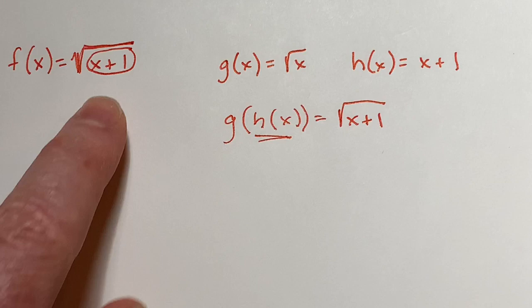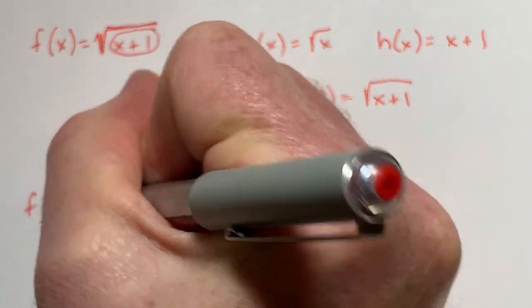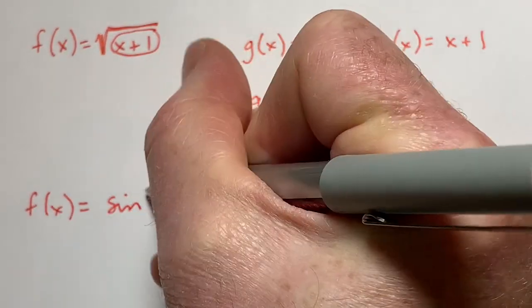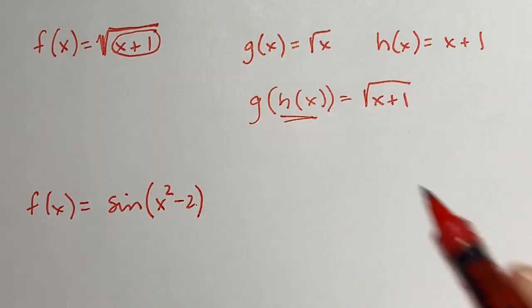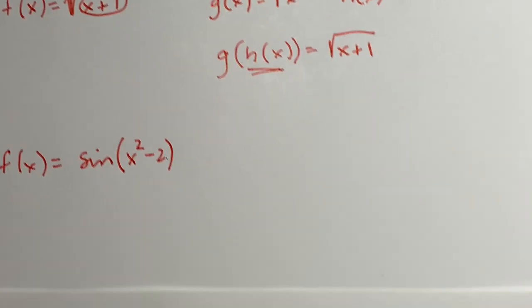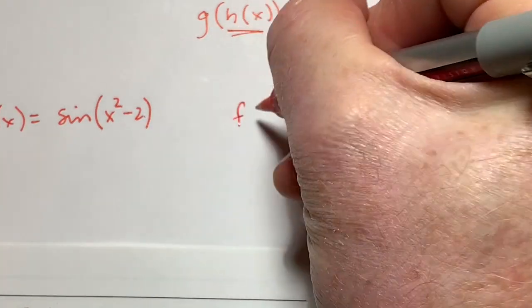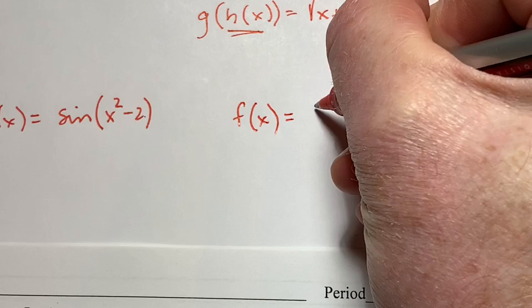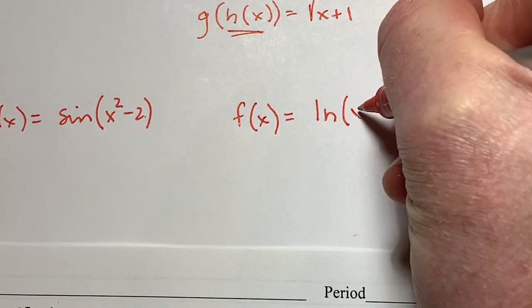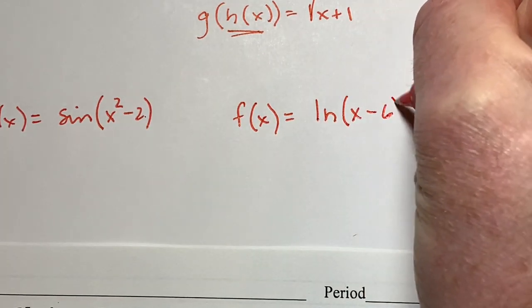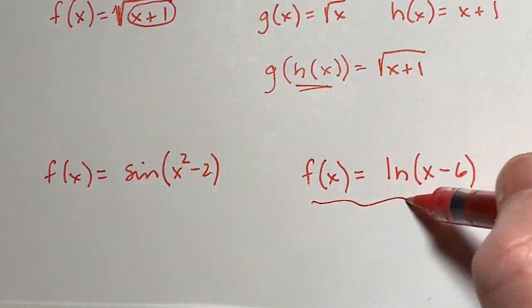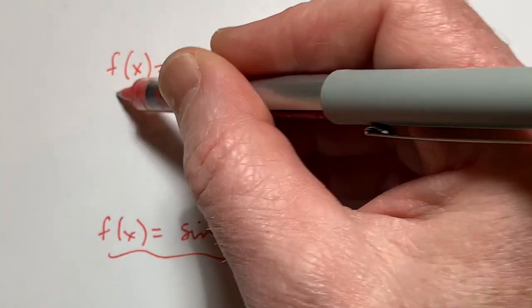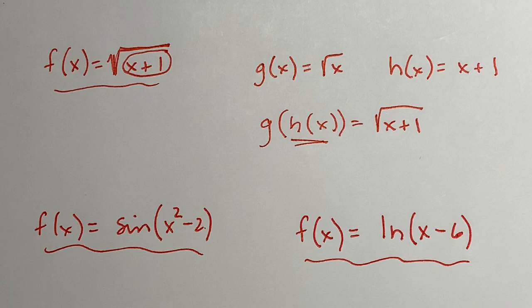It could look something like a trig function — this is a sine of x squared minus two, like a parabola function inserted into a trig function. It could look something like a natural log of x minus six — that is a linear function inserted into a natural log function. All of these functions, whether they're trig, log, or power, are considered composite functions.